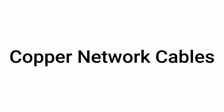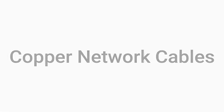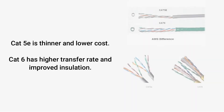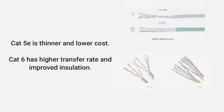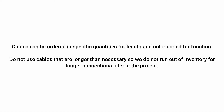There are several types of cables found on site. First are copper network cables, or ethernet cables, which are categorized by their generation and speed. Most commonly found on site are Cat5e and Cat6 cables. Cat5e is slightly thinner than Cat6 and has a lower overall cost. Be sure to use the correct type of cable to ensure it can handle the required transfer rates.